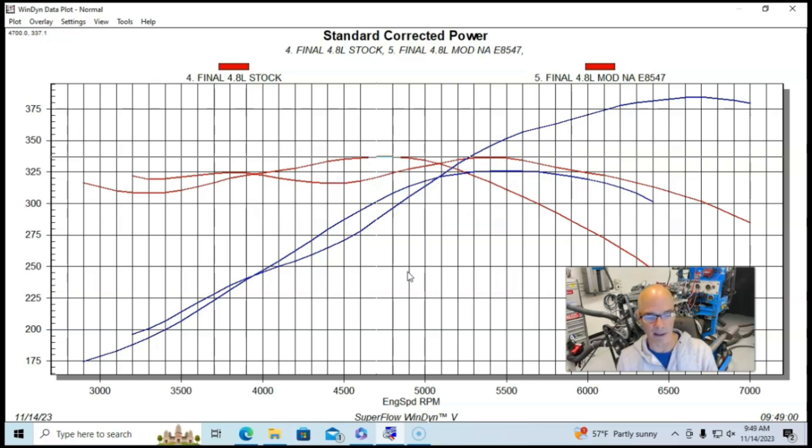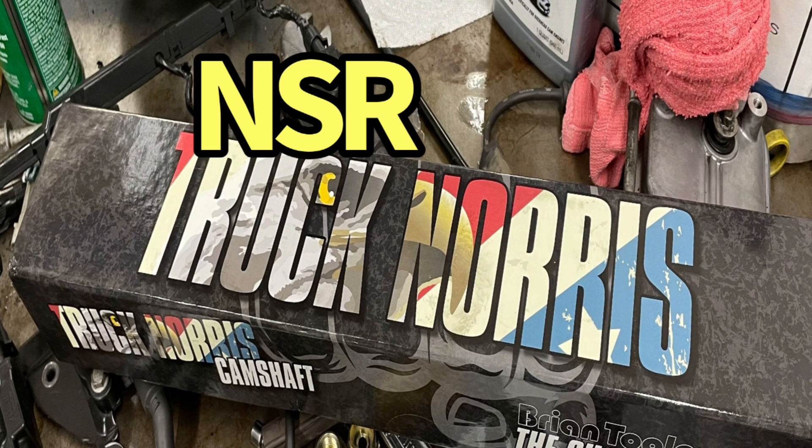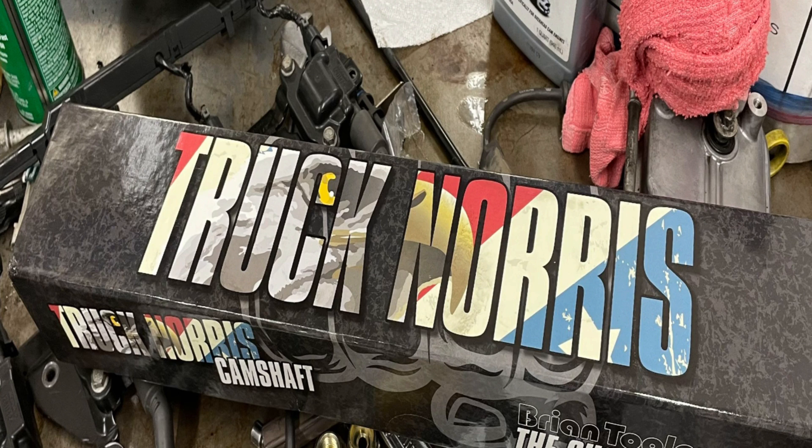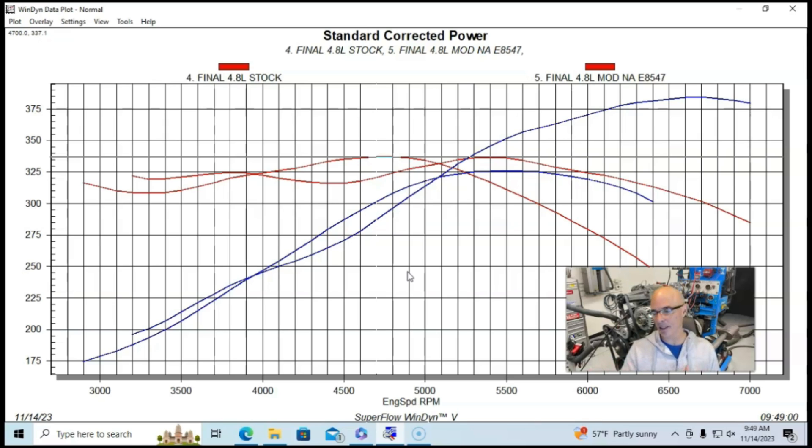In this case, we also put a Brian Tooley Racing Truck Norris No Springs Required cam in it. It happened to already be in the motor when we decided to put the blower on there, and it worked out really well.